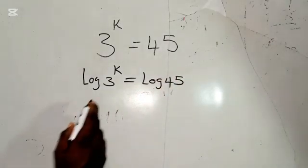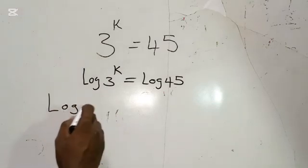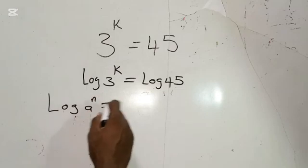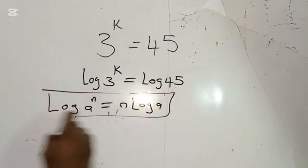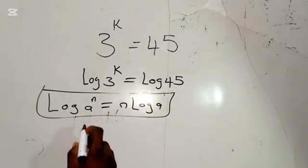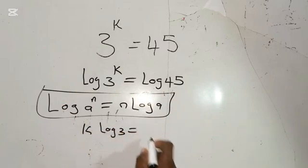Now, let's recall this property which says log a to the power of n is equal to n log a. So recalling this property, we have k log 3 is equal to...